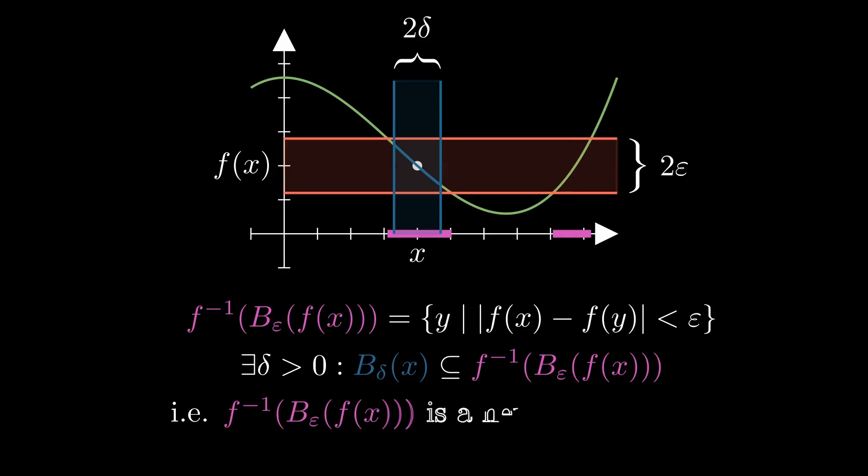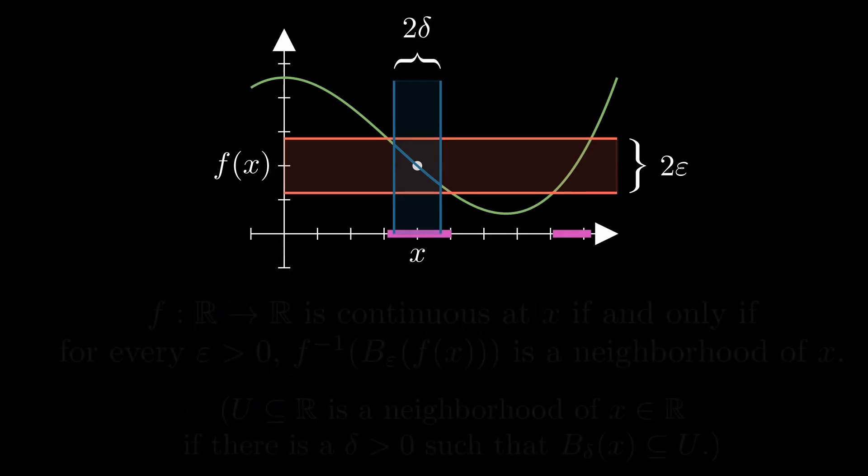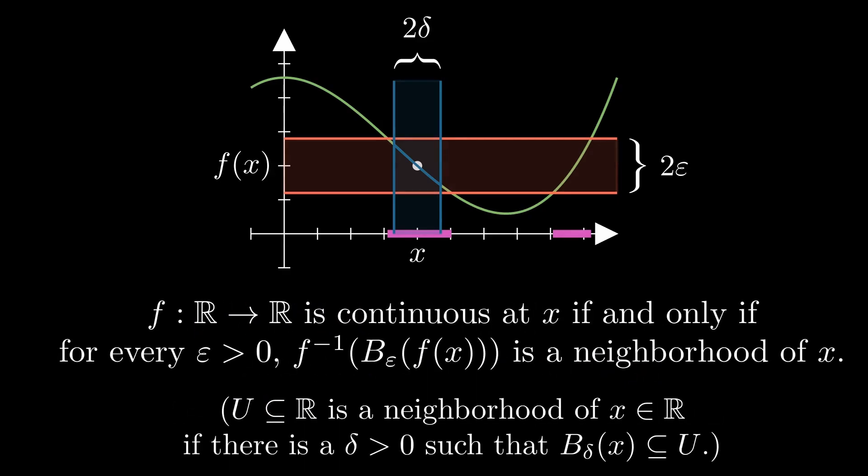Any set that contains a small delta ball around x is called a neighborhood of x. So we can say that f is continuous at x if and only if the pre-image of every epsilon ball around f of x is a neighborhood of x.